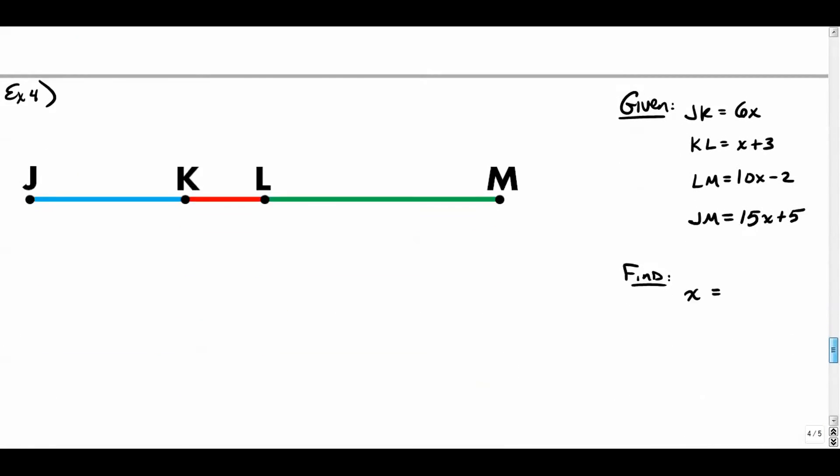Last one. This is the most complicated of the four. It involves three different segments, blue, red, and green. So we'll just put those values in here. The length of segment JK is 6x. The length of segment KL is x plus 3. And the length of segment LM is 10x minus 2. And the whole segment is 15x plus 5. And our job is to find x. We're going to take it a step further and actually plug stuff back in at the end just to make sure everything fits together.